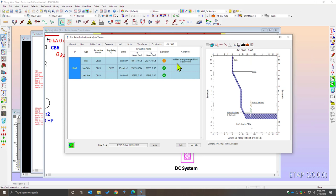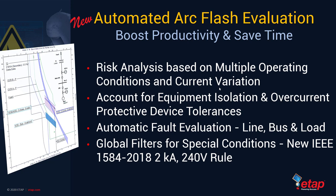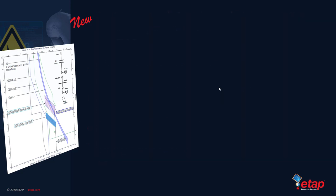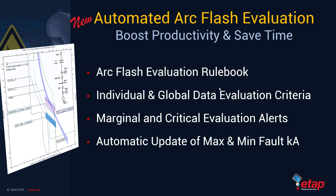The details of Arc Flash auto evaluation will be covered in an upcoming webinar. Automated Arc Flash evaluation can be used to perform risk analysis based on multiple operating conditions and current variation. It accounts for equipment isolation and overcurrent protective device tolerances, and can automatically evaluate faults on the line side, bus side, and load side of protective devices. It also includes global filters for special conditions such as the new IEEE 1584-2018 2kA or 240V rule.